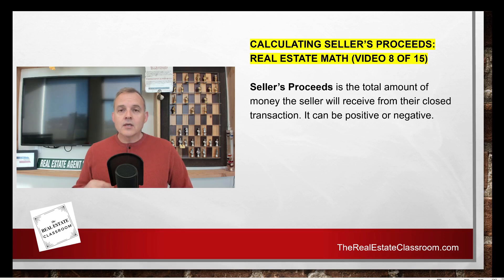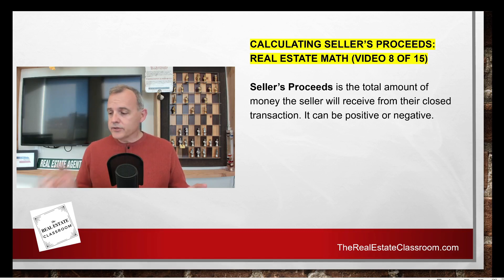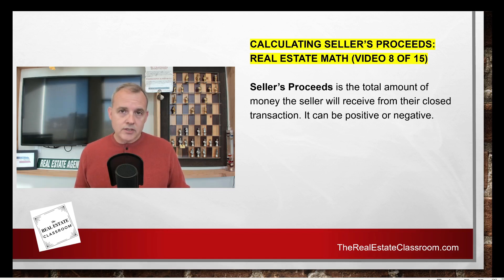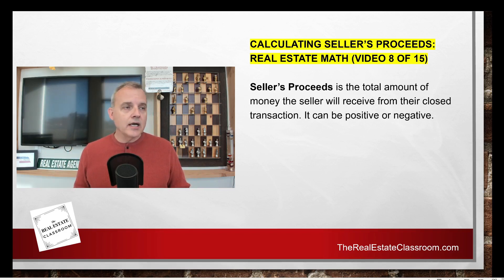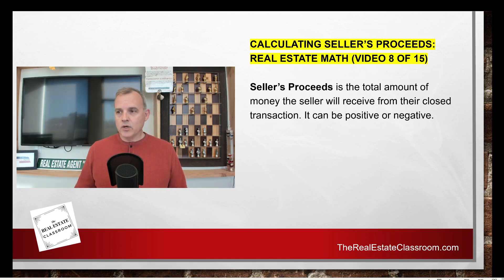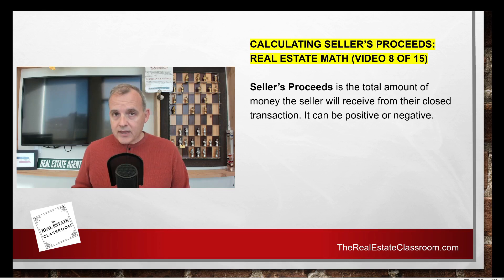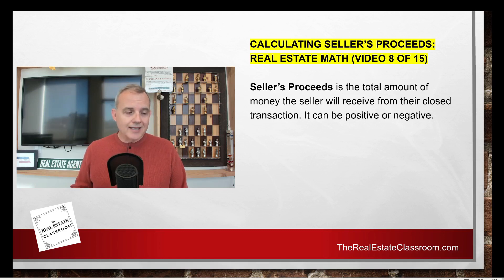Now a seller net proceed can actually be negative as well. For example, a seller sells his house for $100,000 and there's $50,000 in liabilities against the house, such as the mortgage and real estate commissions. So $100,000 minus $50,000 gives the seller a net proceed of $50,000. But there are times when it's negative — if the house sells for $100,000 but there are $150,000 of liabilities, the seller has to bring $50,000 to the closing. That's a negative proceed situation.